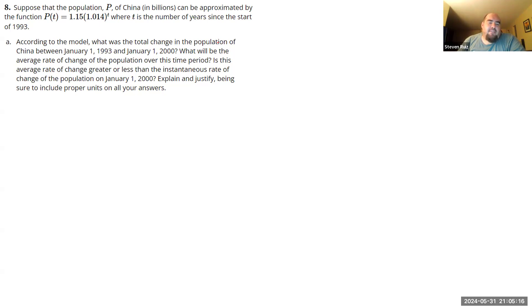First thing we're asked is about the total change in population between 1993 and 2000. So we're given a reference time of 1993, which means that basically we're being asked about these two values of P. So P of 0 and P of 7.